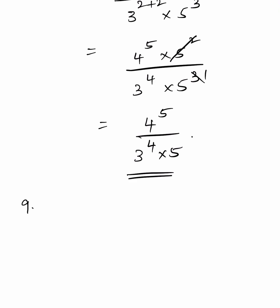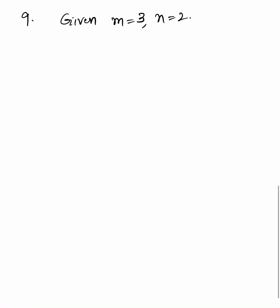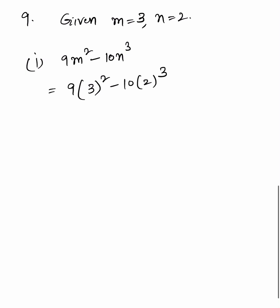Ninth problem. It is given m equals 3 and n equals 2. We have to find the value of the given expressions. First: 9m square minus 10n cube equals 9 into 3 square minus 10 into 2 cube, equals 9 into 9 minus 10 into 8, equals 81 minus 80, equals 1.